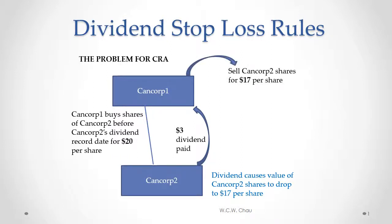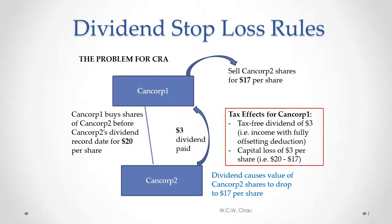CanCorp 1 then sells those CanCorp 2 shares for the market value of $17 per share. The first tax effect for CanCorp 1 is that the $3 dividend received from CanCorp 2 is tax-free, because any intercorporate dividend paid between two Canadian corporations is done on a tax-free basis.